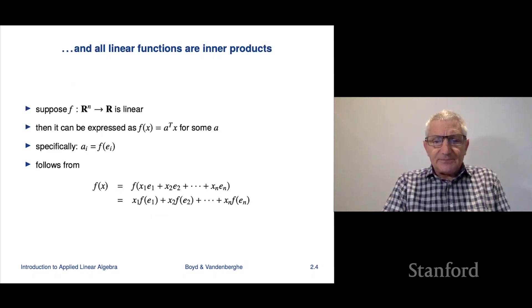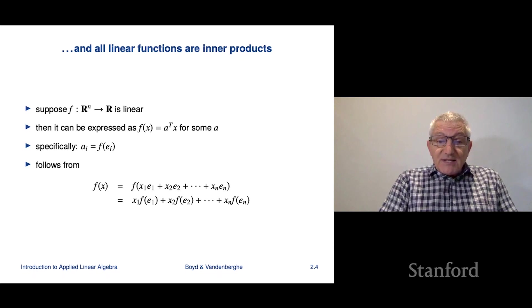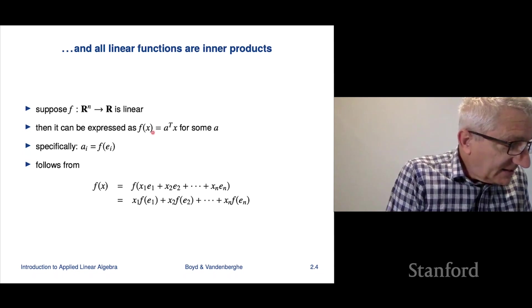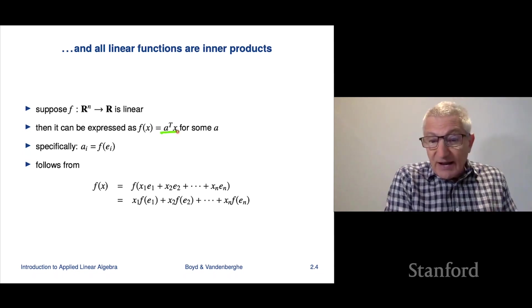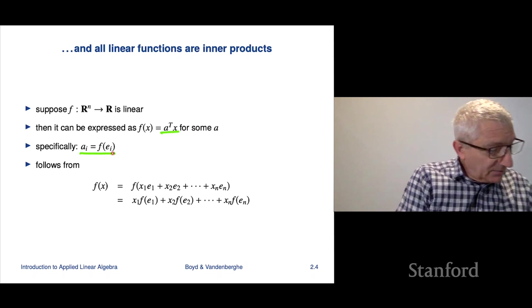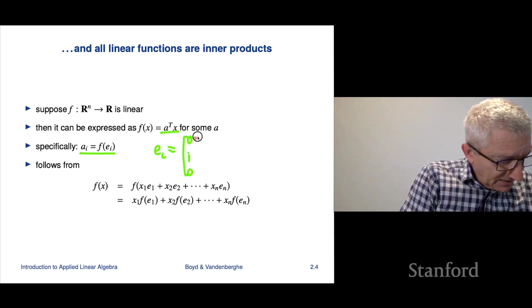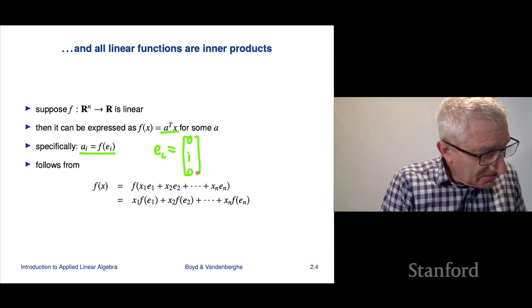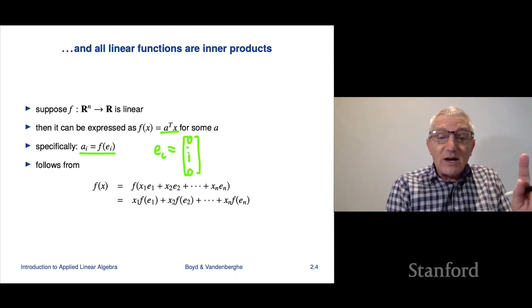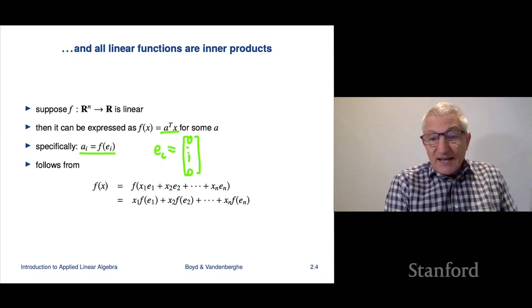Now, it turns out, in fact, that's all the linear functions there are. So another way to say it is this. Suppose I tell you simply that a function is linear. You know absolutely nothing more about it. Then it turns out, we can actually write it as the inner product of x with a vector a, for an a. And we're gonna be very specific about what a is. a_i is simply f of e_i. And remember that e_i is the i-th unit vector. It's a vector with all entries 0 and 1 in the i-th position and that's it. So it says a_i is you apply f to that vector, you get a number, that's a_i.